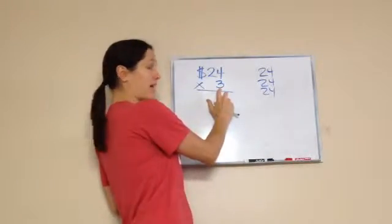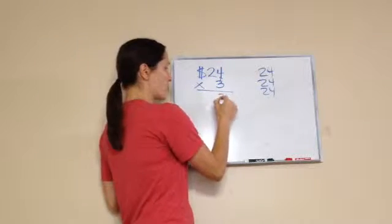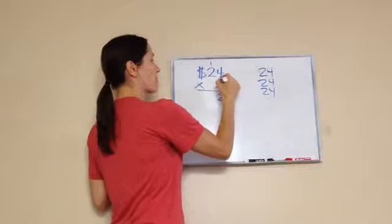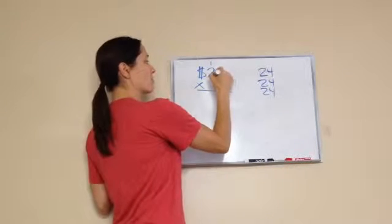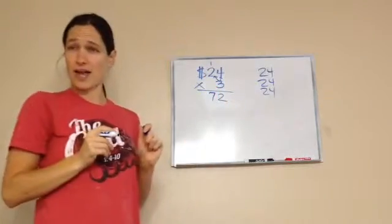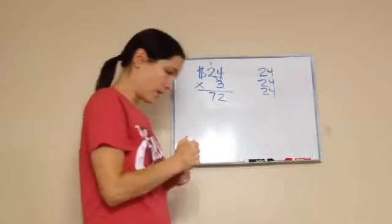So you always start right here, and we go up. Three times four is 12, and you carry the one like usual when we're working. And then you remember we go like this. That's three times two is six, plus one more is seven. Do you remember us doing that, Eli? So the answer to this question will be 72.